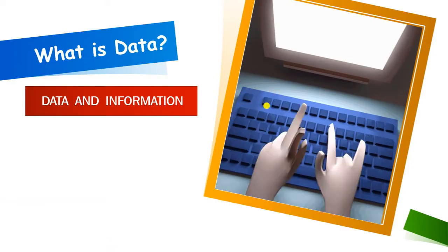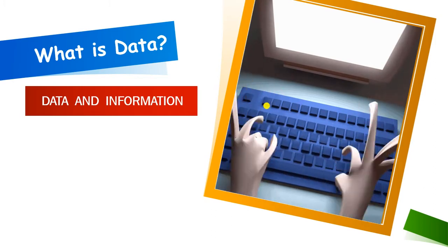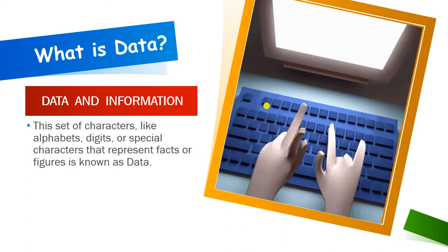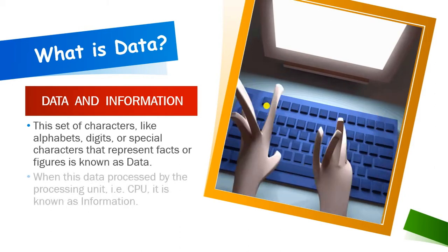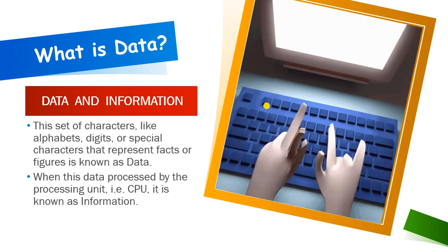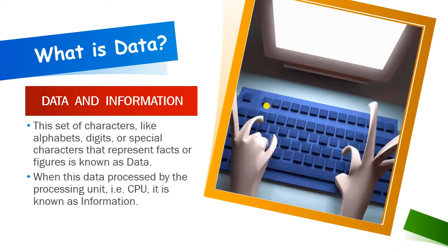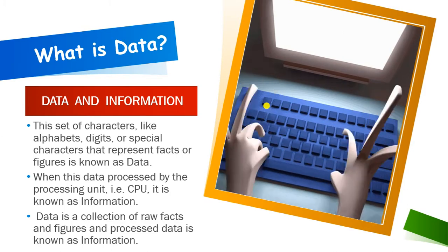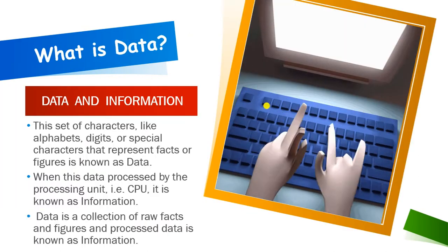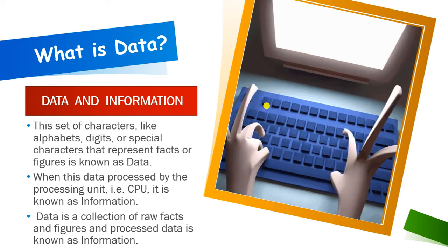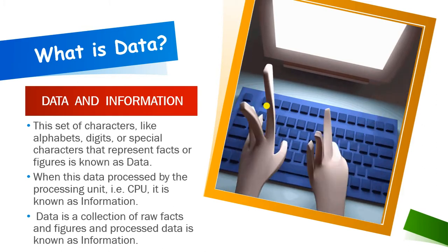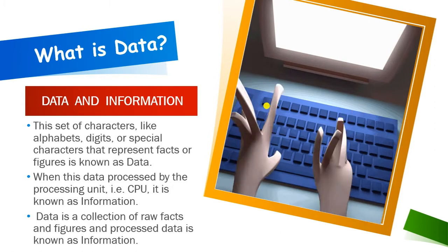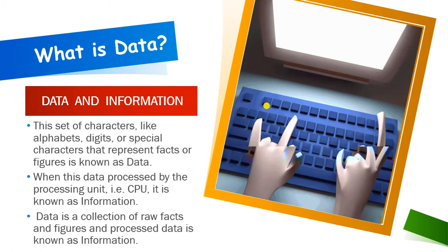What is data? Whatever we type — like alphabets, digits, special symbols, or anything we type in the computer — is called data. When you give data to the computer, the computer processes it. Process means to work on that data. The computer works on it in the CPU — the full form of CPU is Central Processing Unit, which is called the brain of the computer — and it gives you information.